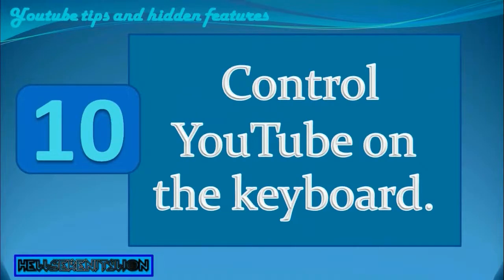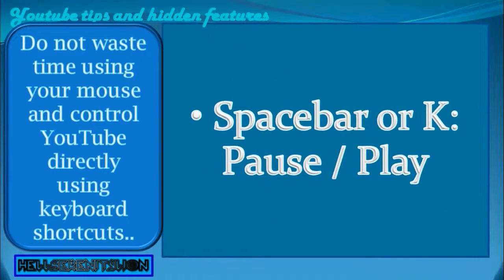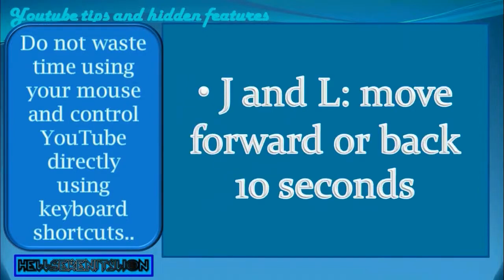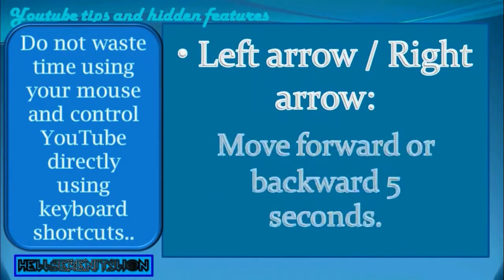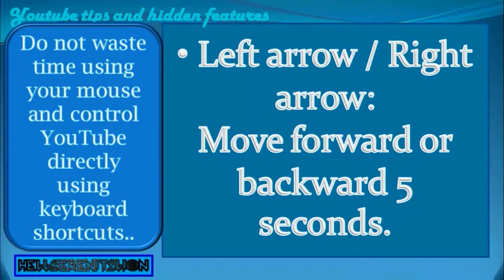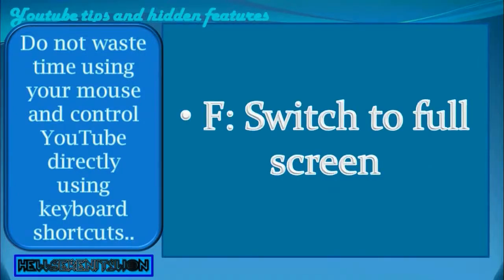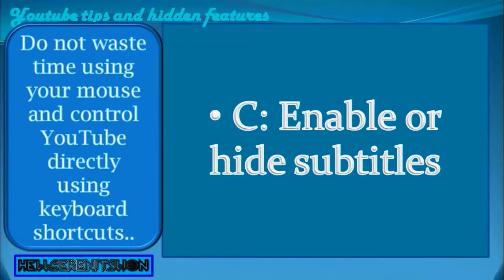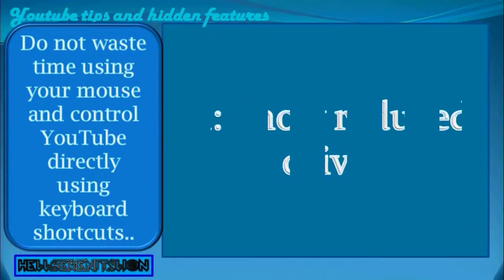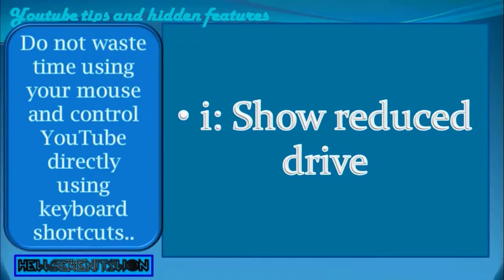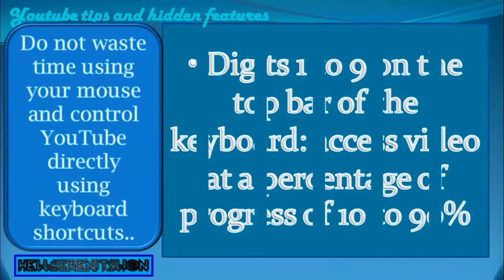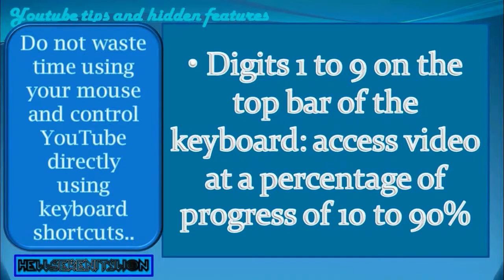10. Control YouTube on the keyboard. Don't waste time using your mouse — control YouTube directly using keyboard shortcuts. Space bar or K: pause/play. J and L: move forward or back 10 seconds. Left/right arrow: move forward or backward 5 seconds. Up/down arrow: increase or decrease volume. F: switch to full screen. C: enable or hide subtitles. I: show miniplayer. Digits 1 to 9 on the top bar of the keyboard: access video at a percentage of progress from 10% to 90%.